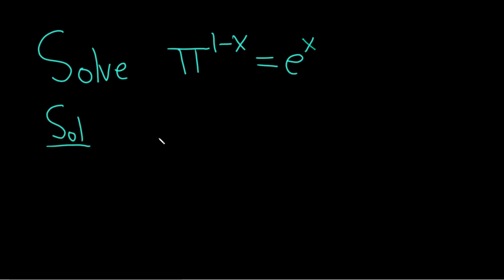We have an exponential equation and since it doesn't seem that we can make the bases the same in an easy way, let's go ahead and just take the natural log of both sides. So we have the natural log of π^(1-x) and that's equal to the natural log of e^x.